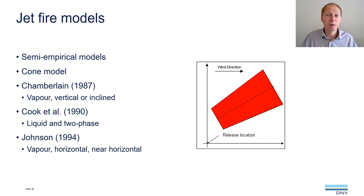To model Jetfires, there are different categories of models that can be used. On one end of the scale, you have complex computational fluid dynamics based models that are computationally expensive and typically complex to implement. On the other end of the scale, you have correlation-based models — so-called semi-empirical models — that are typically derived from experimental data. It's these semi-empirical models that we are studying in this presentation.